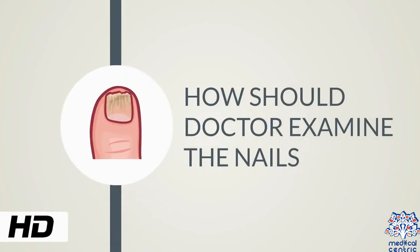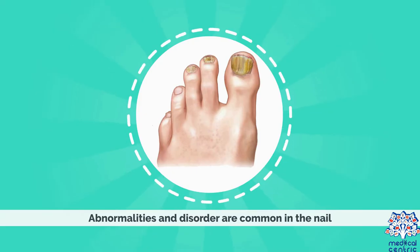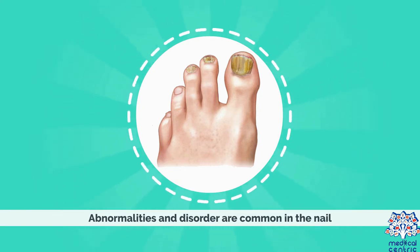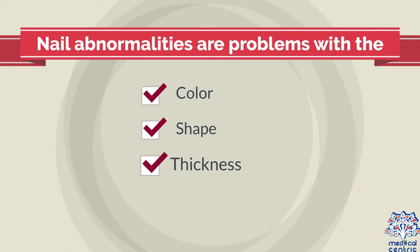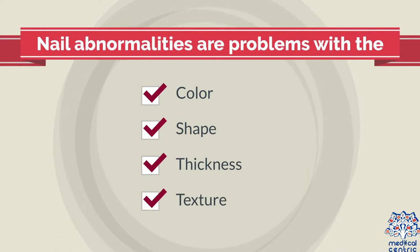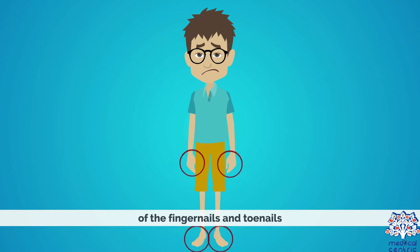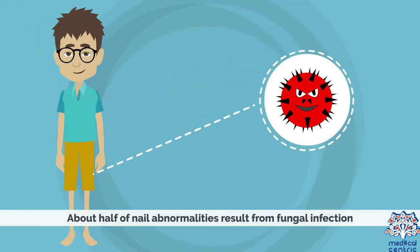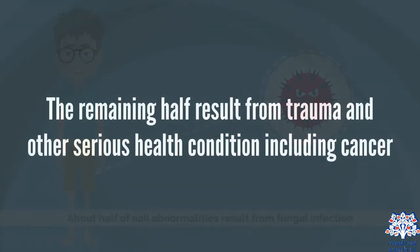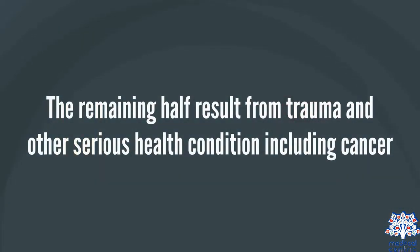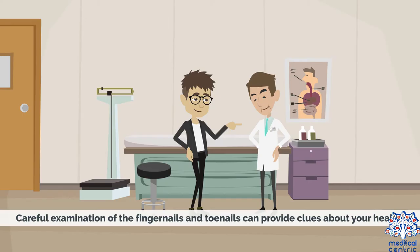Today's topic is how should the doctor examine the nails. Abnormalities and disorders are common in the nail. Nail abnormalities are problems with the color, shape, thickness, and texture of the fingernails and toenails. About half of nail abnormalities result from fungal infection. The remaining half result from trauma and other serious health conditions, including cancer. Careful examination of the fingernails and toenails can provide clues about your health.